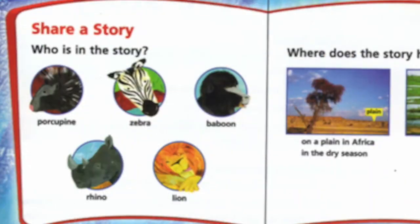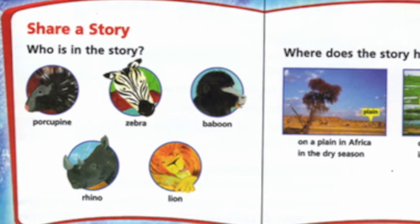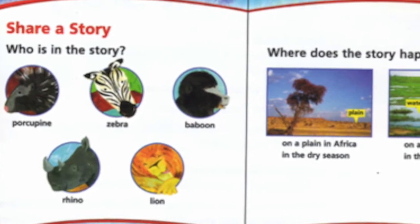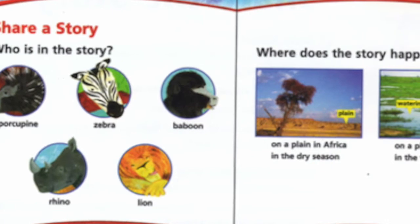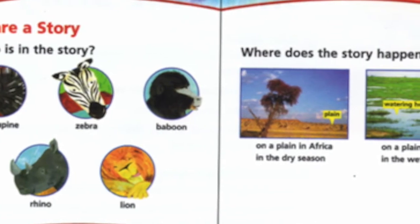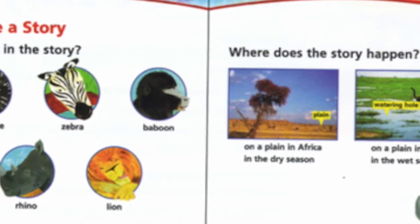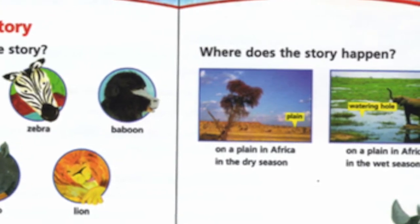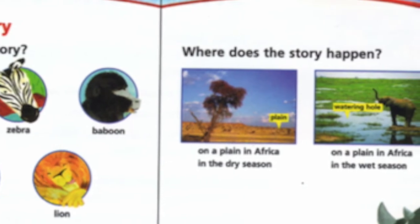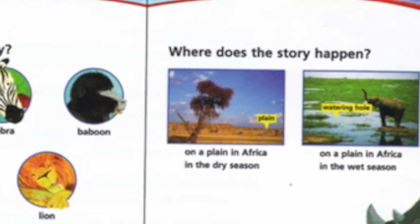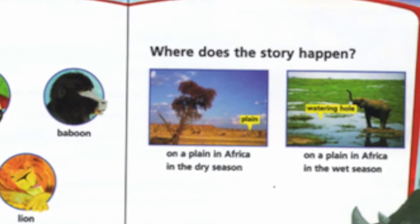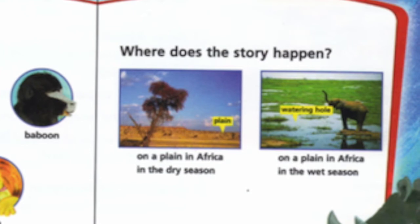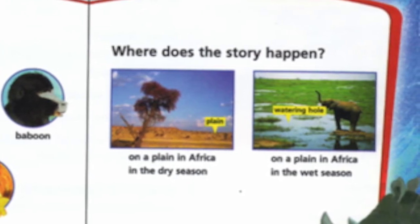The characters in this story are a porcupine, a zebra, a baboon, a rhino, and a lion. The setting, or where the story happens, is a place called the African savannah, or the African grasslands. The time is two different seasons. The first part of the story takes place in the dry season, and the second half happens in the wet season.